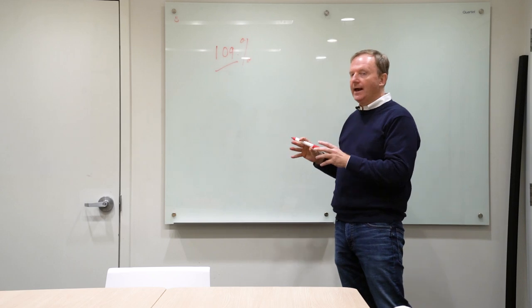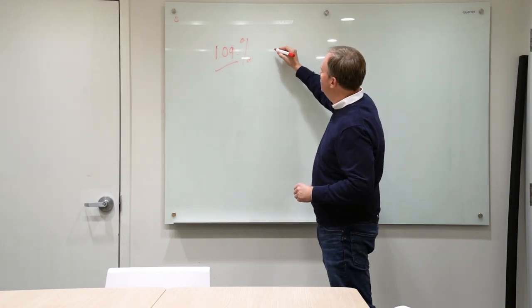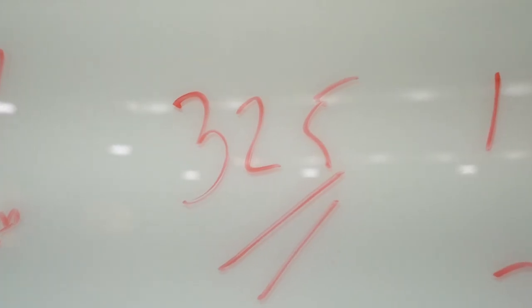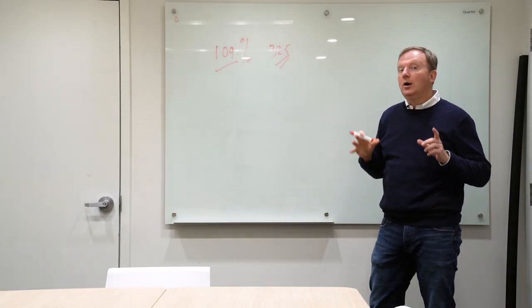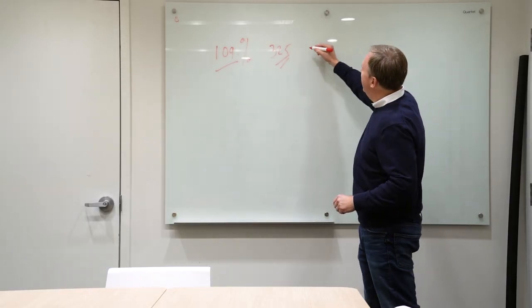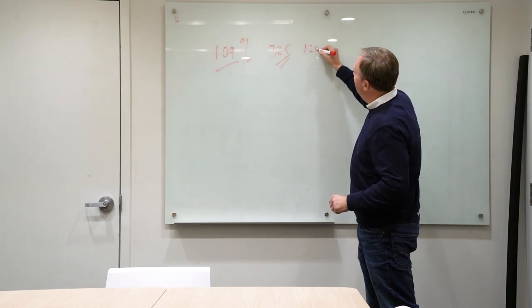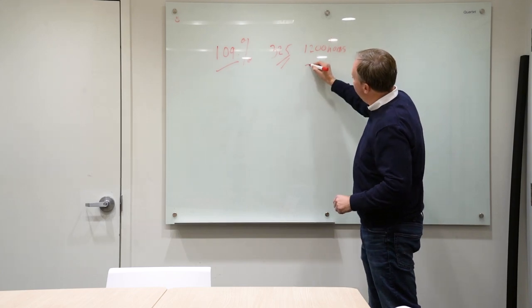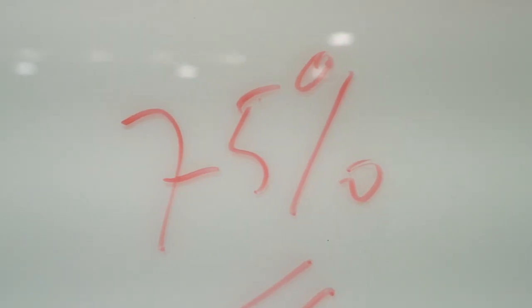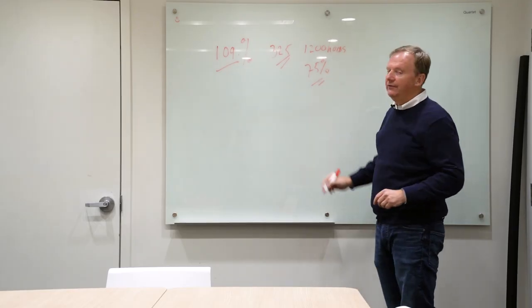Now why is that? The reason being is because we have about 325 houses on the market right now. Compared to last year at the same time we had about 1,200 houses on the market. Now that is a 75% decrease in homes available.